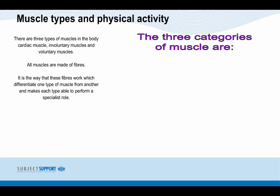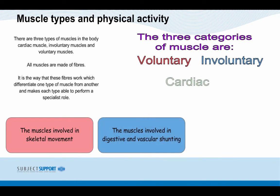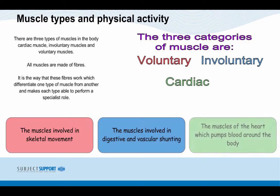Three categories of muscle are: voluntary, involuntary, and cardiac. Voluntary muscles are the muscles involved in skeletal movement. Involuntary muscles are the muscles involved in digestive and vascular shunting. And cardiac muscles are the muscles of the heart which pump blood around the body.